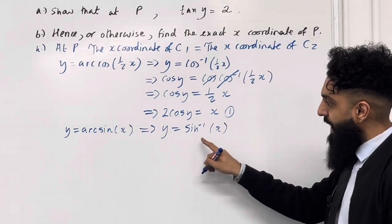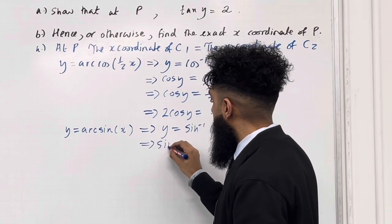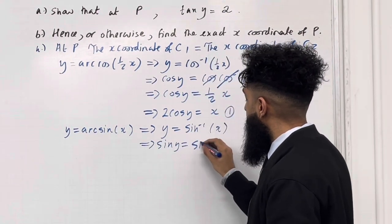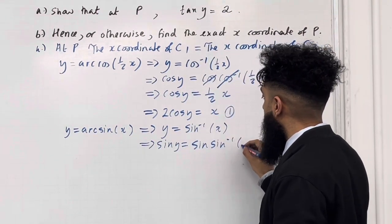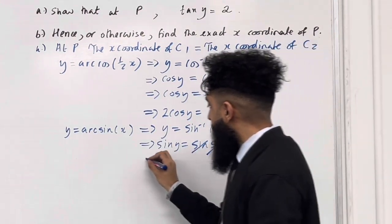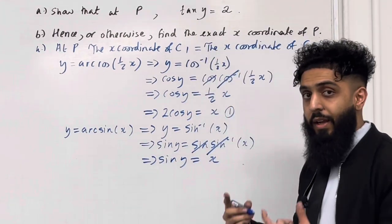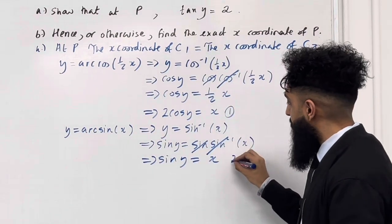To get rid of the sin inverse, I must apply sin on both sides. So this implies that sin y = sin(sin⁻¹(x)). The sin and sin inverse cancel out, reducing the equation to sin y = x. I can call this equation 2.